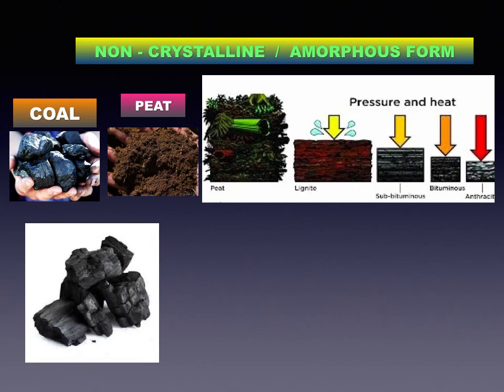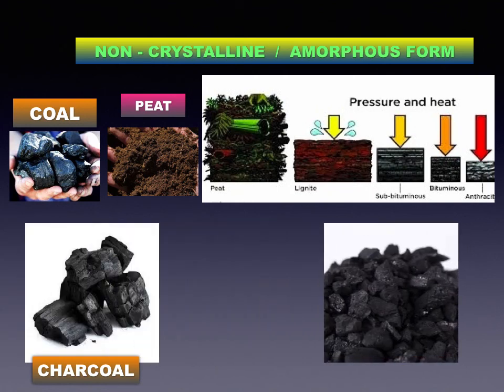The second amorphous form is charcoal. Charcoal made from animals is made from bones, horns, etc. Charcoal made from plants is formed by combustion of wood in an insufficient supply of air. Coal is used as fuel in factories and homes, to obtain coal gas and coal tar, and in thermal power plants for generation of electricity. The third amorphous form is coke — the pure coke that remains when coal gas has been taken away from coal.